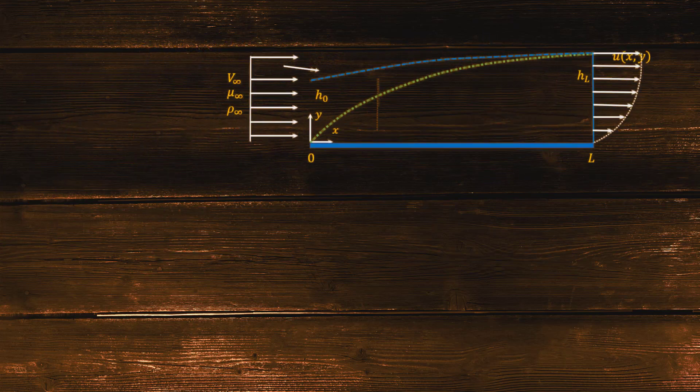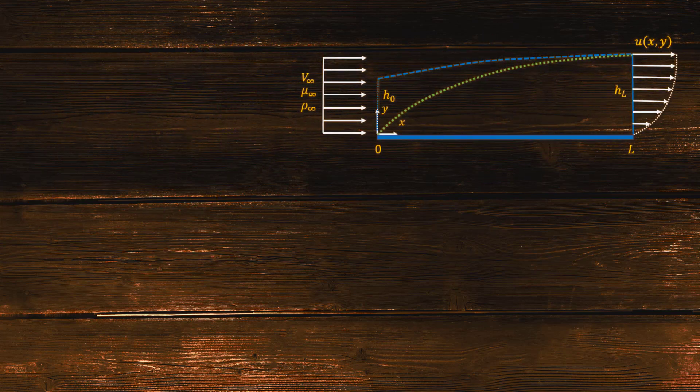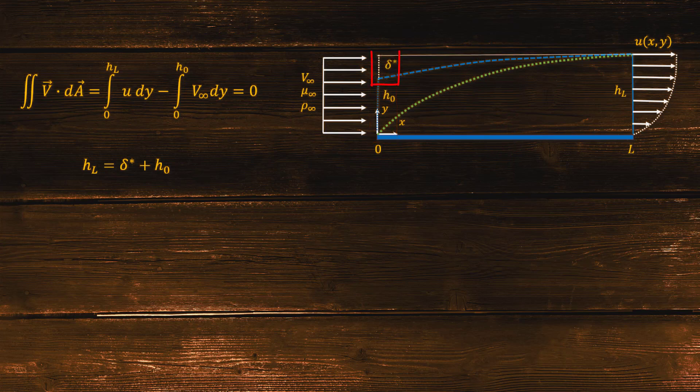The integral form of the conservation of mass for constant density flow tells us that the volume flux through the domain must be conserved. In our control volume, only the two vertical boundaries, at location 0 and location L, contribute to this balance, since there cannot be flow across a wall or a streamline. We can define the height HL as the sum of H0 plus a delta star term. Substituting this expression into the second integral and rearranging the terms, we obtain an expression for the delta star term.